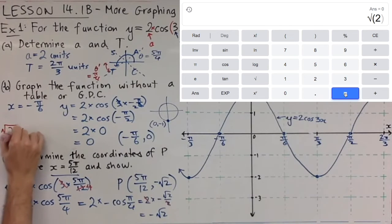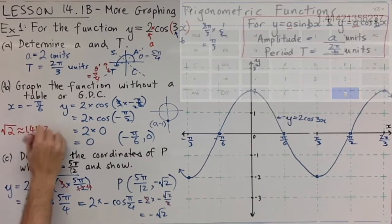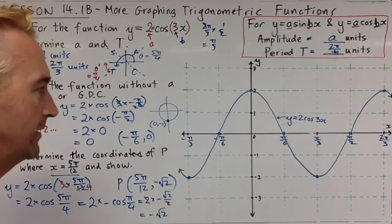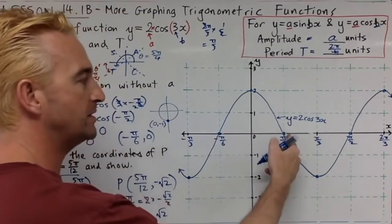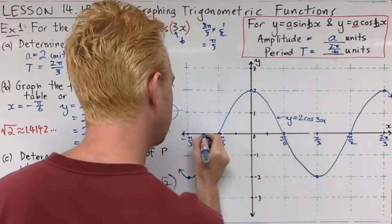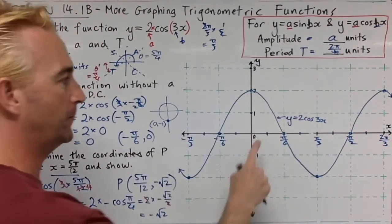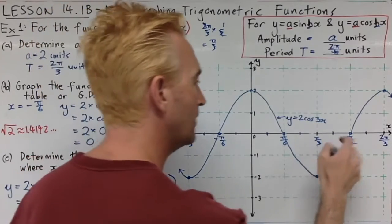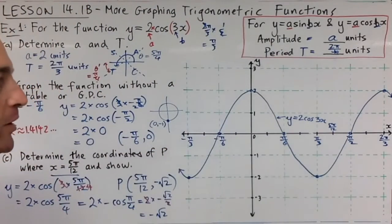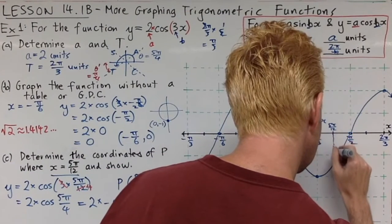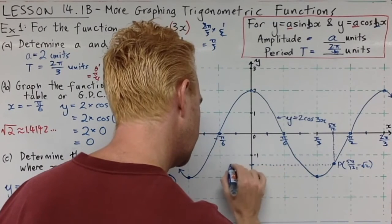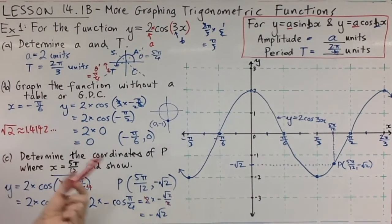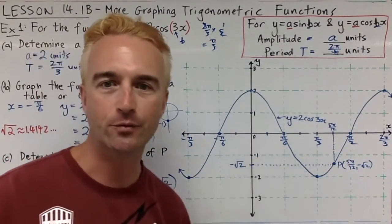Root 2 is approximately 1.4142, so P is at about −1.414 on the y-axis. To locate 5π/12 on the graph, note that π/6 is already marked, so π/12 is halfway between those increments. Counting: π/12, 2π/12, 3π/12, 4π/12, and 5π/12 lands here. Coming down from that x-coordinate to the curve gives point P. At negative √2 (approximately −1.414), it falls between −1 and −2, closer to −1, which looks right on the graph.